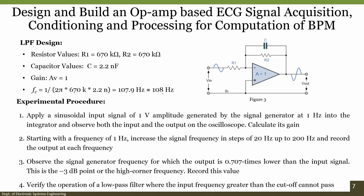For the experimental procedure: apply a sinusoidal signal of 1 volt amplitude generated by the signal generator at 1 hertz into the integrator and observe the input and output on the oscilloscope. Calculate the gain. Starting at 1 hertz, increase the signal frequency in steps of 20 hertz up to 200 hertz and record the output at each frequency. Observe the signal generator frequency for which the output is 0.707 times lower than the input signal — that is the minus 3 dB point. Verify the operation: signals above the cutoff frequency should not pass through the low pass filter.